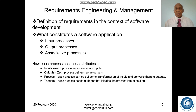What constitutes a software application? Normally a software application has three processes: input processes, output processes, and associative processes. Inputs take input from the users; outputs deliver results on the screen, on paper, or elsewhere. Associative processes validate the inputs before taking them inside and validate and format the outputs before they go out. A software application consists of basically these three processes.